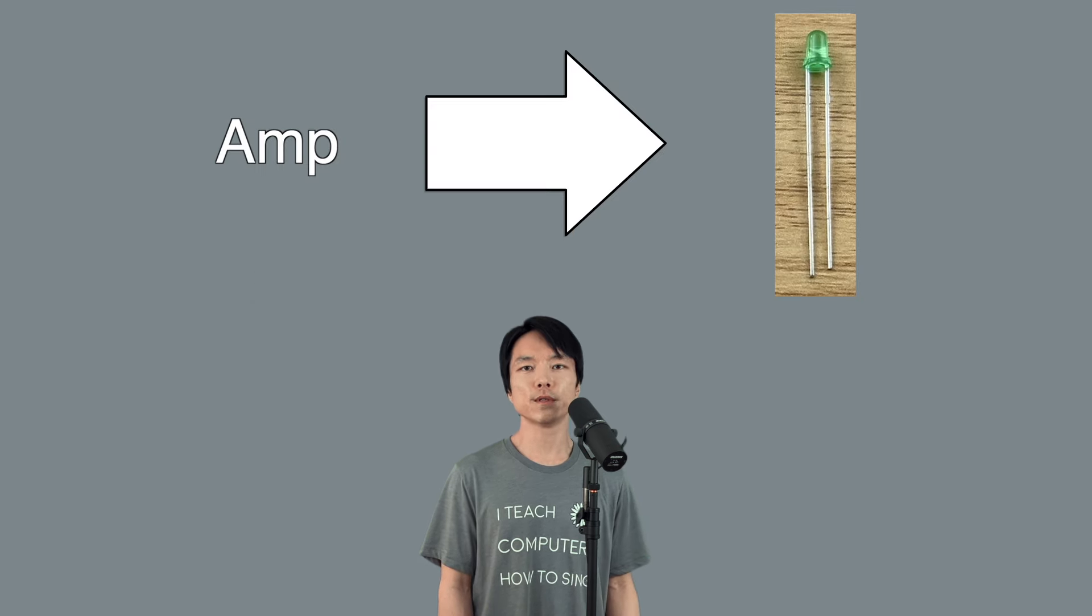The goal is to map the amplitude of the oscillator to the brightness of the LED. So when the tone gets louder, the LED will get brighter and vice versa. Okay, let's get started right away.